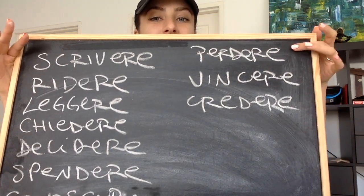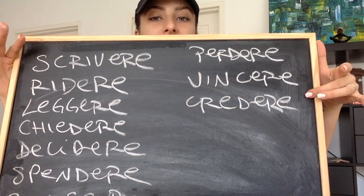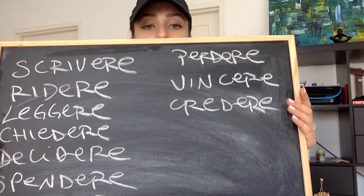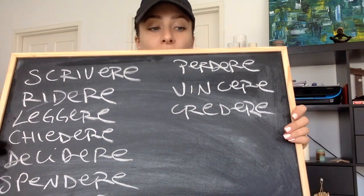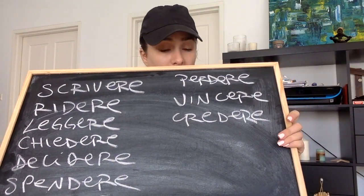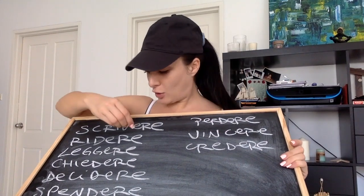We also have 'vincere' — to win, and 'credere' — to believe. Have a look at the spelling. I'll pronounce them again: scrivere, ridere, leggere, chiedere, decidere, spendere, conoscere, mettere, perdere, vincere, credere.